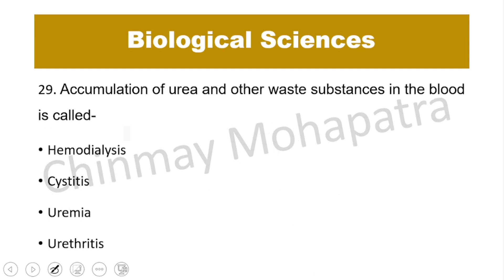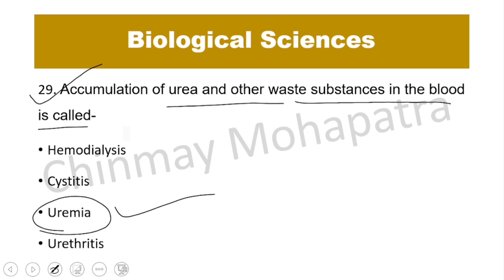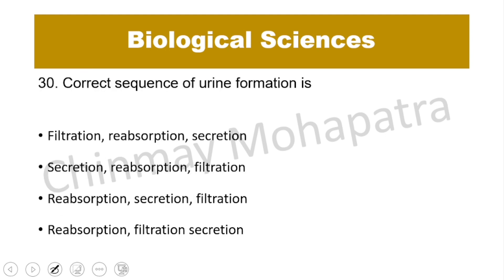Question number 29: Accumulation of urea and other waste substances in the blood is called uremia. The right answer is uremia.